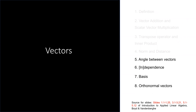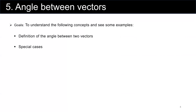Now we are going to first talk about the angle between two vectors. The goal of this part is to understand the following concepts and see some examples: first, the definition of the angle between two vectors, and second, the special cases.